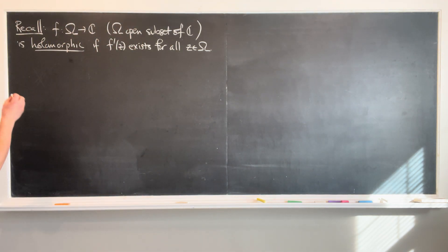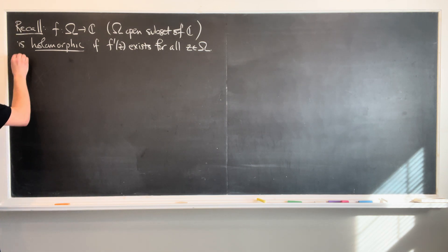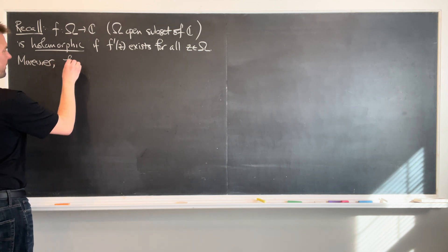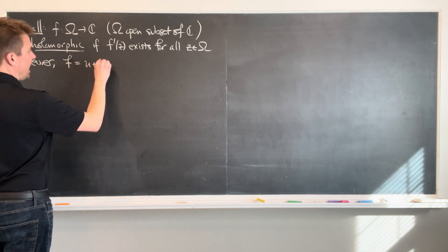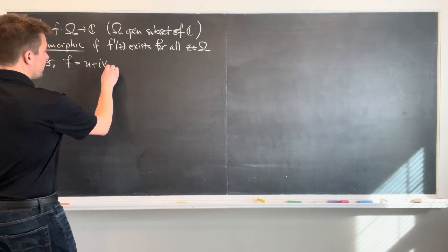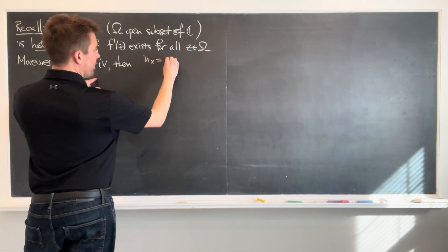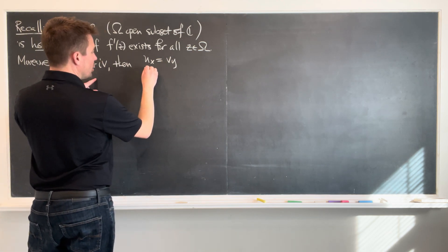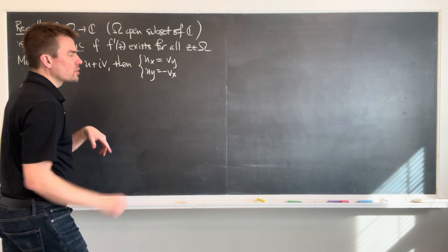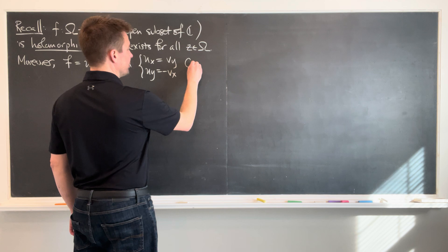Now, we saw previously that if this condition holds, then moreover, if we write f is u plus iv, the real part plus the imaginary part, then ux has to be equal to vy and uy has to be equal to negative vx. And these equations over here are the Cauchy-Riemann equations. Beautiful.